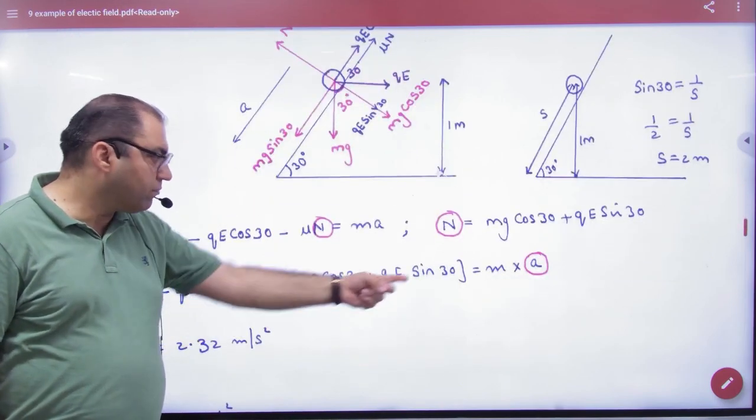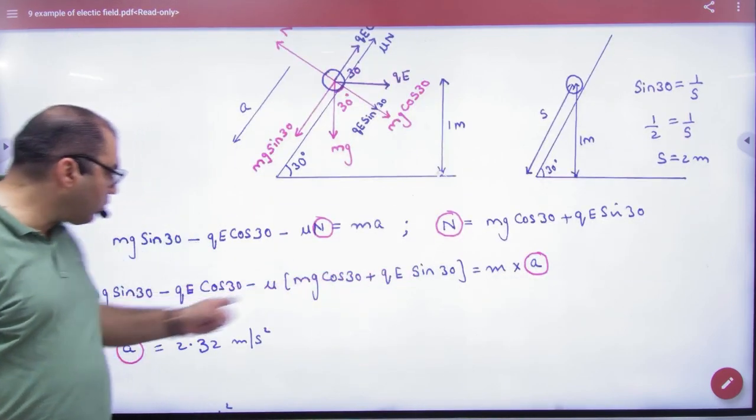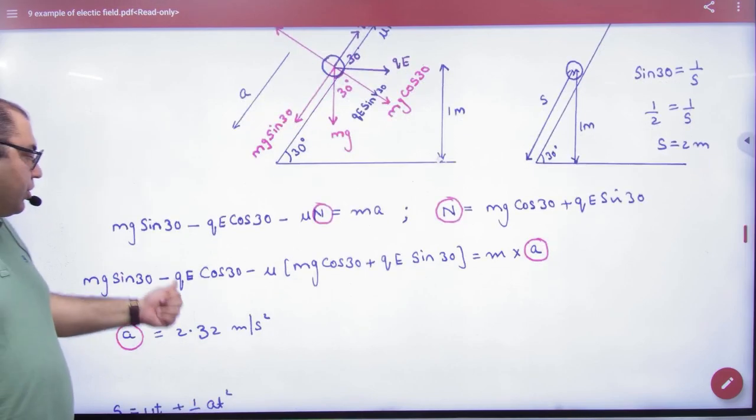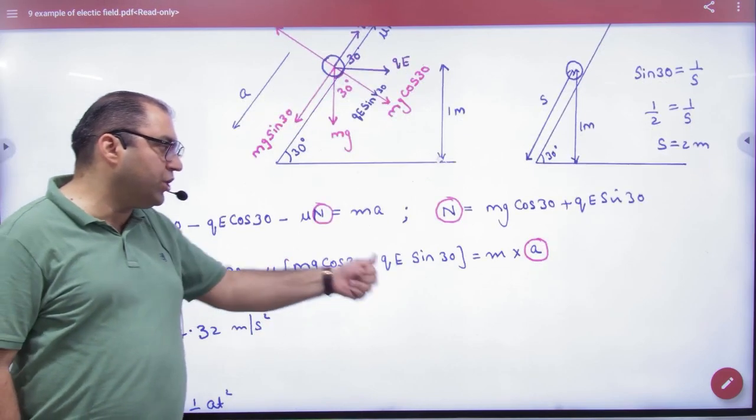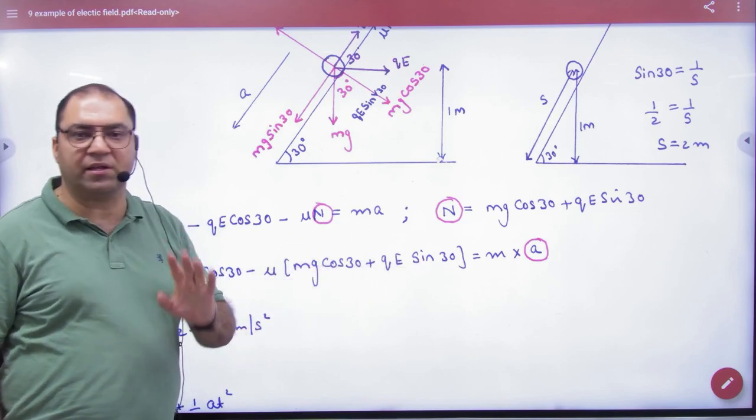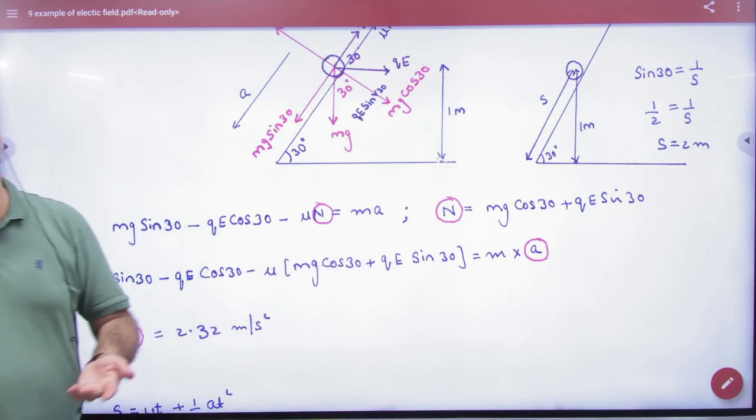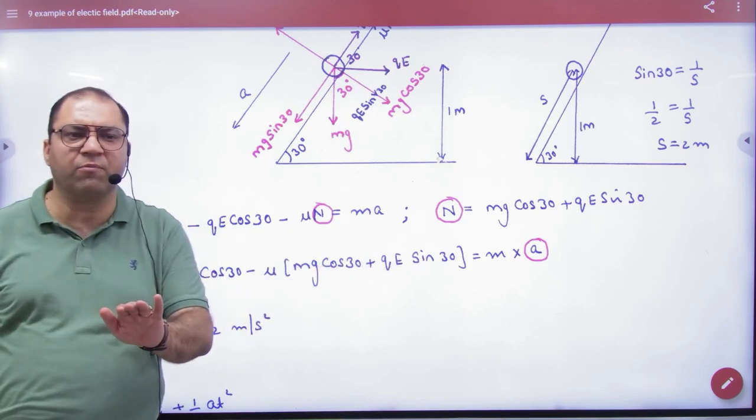Put the normal reaction value here. And then, everything you have given is mg, QE, mu. You have to find a. If a comes, then the time will come. The question is solvable.